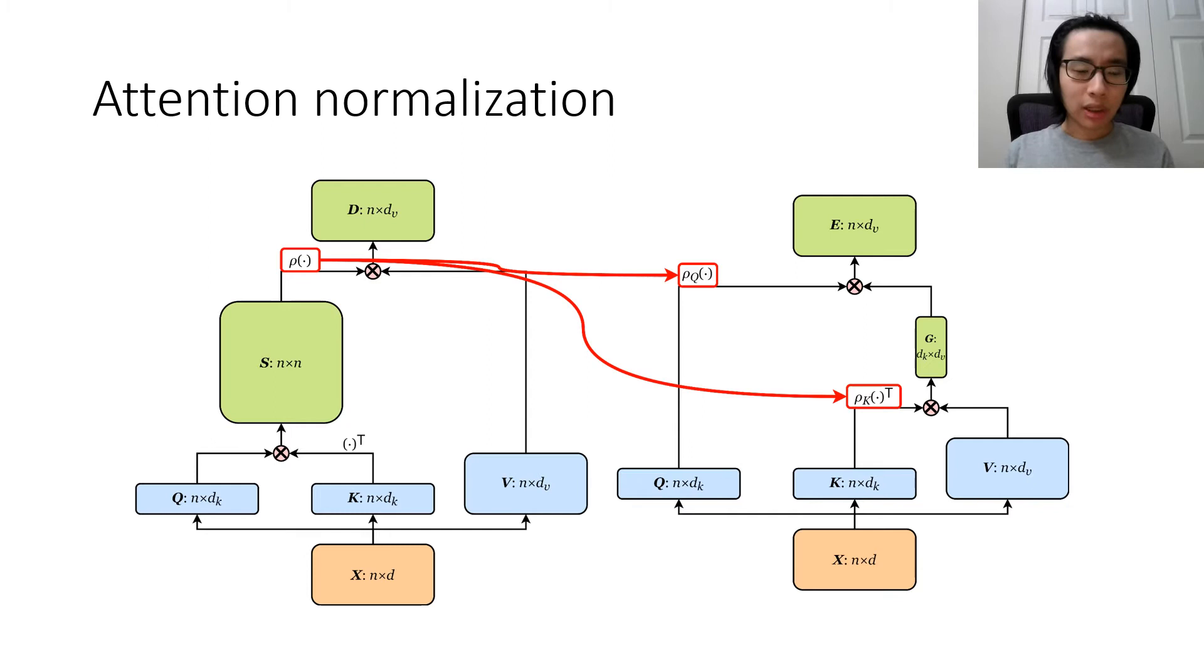If you have a non-linear normalizer on the original dot product attention module, then this operation would break the mathematical equivalence between dot product attention and efficient attention. However, we have empirical results to show that this approximate equivalence does not impact performance at all.